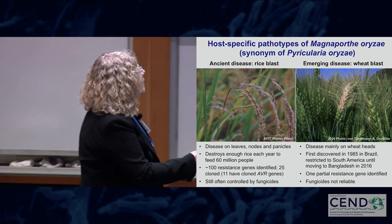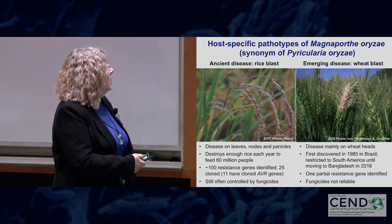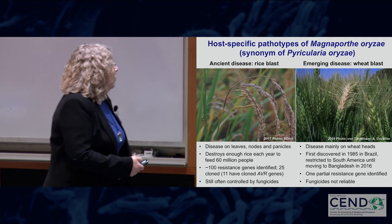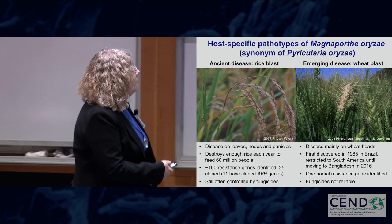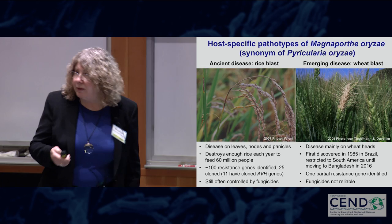Wheat blast is behaving a little differently — it's mainly on the heads. If the rachis is infected, all of the head above the infection is dead, so you can get zero percent yields. It was first discovered in 1985 in Brazil, restricted to South America until 2016 when it moved continents and showed up in Bangladesh. Unlike rice blast where we have over 100 resistance genes, we're having trouble finding resistance genes in wheat to the blast fungus. We've got one gene that kind of works, but that's it, and fungicides don't work if the environment is right for disease.